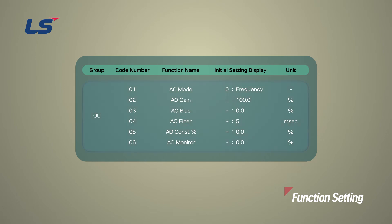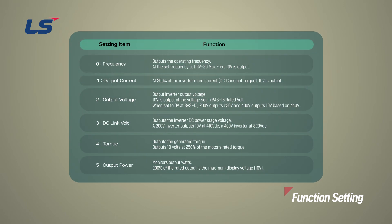Parameters for analog output can be set in the OU group. The AO terminal is a multi-function output terminal. Therefore, you can directly select the output item for AO in OU group 1 parameter. The output items can be selected from the operating frequency shown on the screen to the fixed value output. In this video, we will select the zero operating frequency.